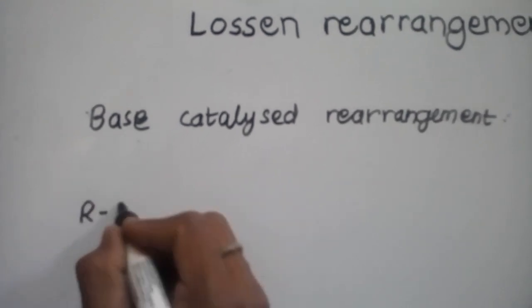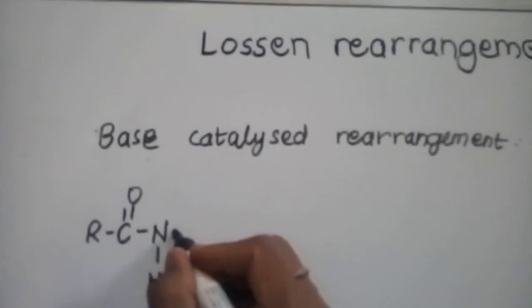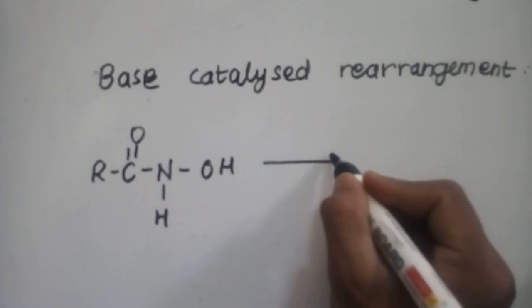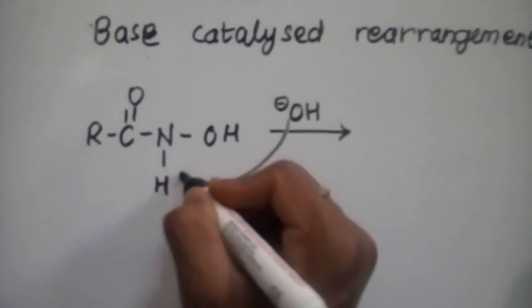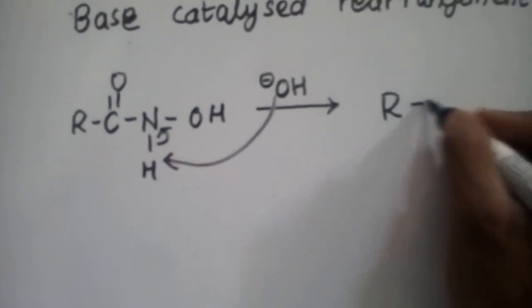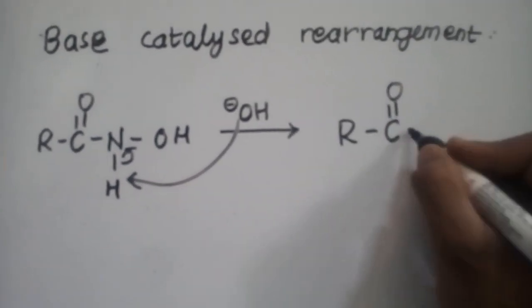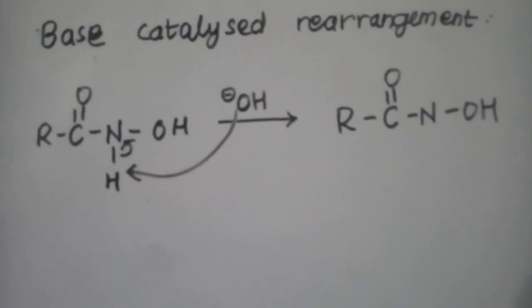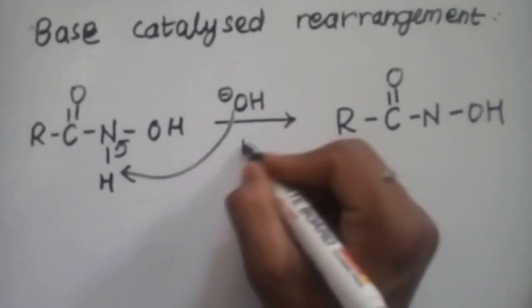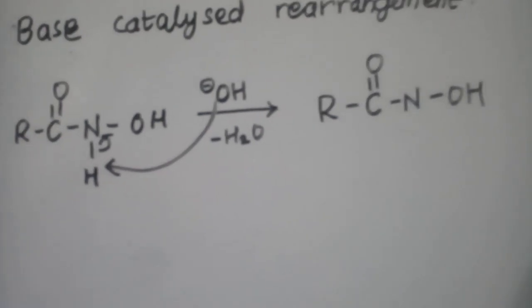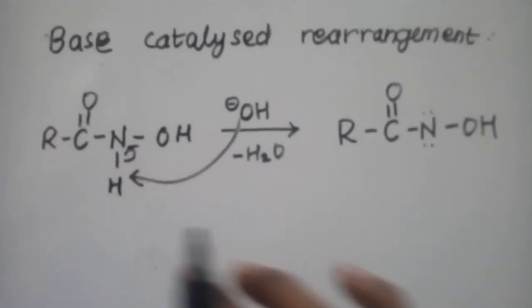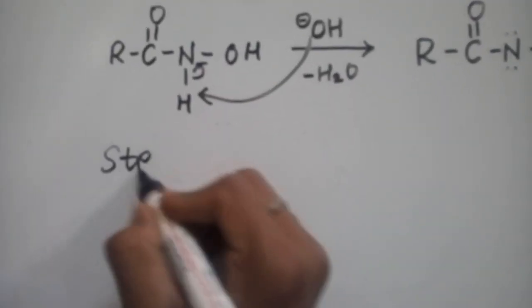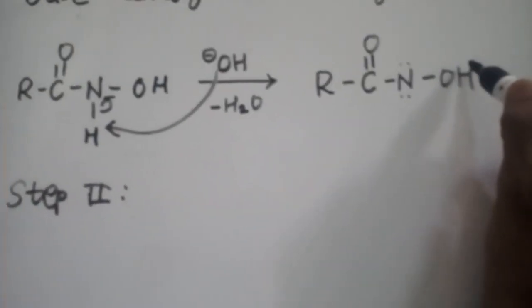Now for the base-catalyzed rearrangement. We start with a hydroxamic acid. In this reaction, we use a base as a catalyst — that is OH⁻ ions are provided in the medium. These OH⁻ ions abstract the proton from the molecule, so the H⁺ ion is removed as water, and we get a deprotonated molecule. Deprotonation occurs — the H⁺ is removed by the base.